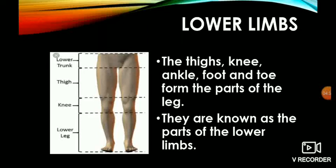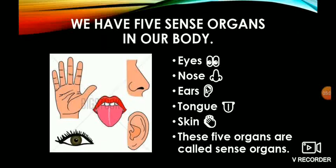We have five sense organs in our body: eyes, nose, ears, tongue and skin. These are all the five sense organs of the body.